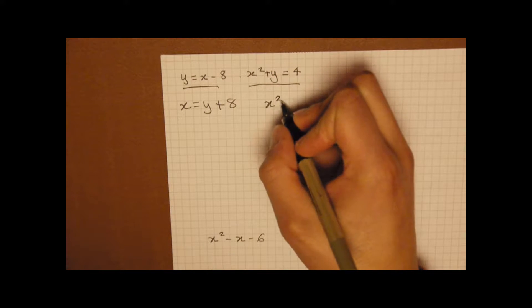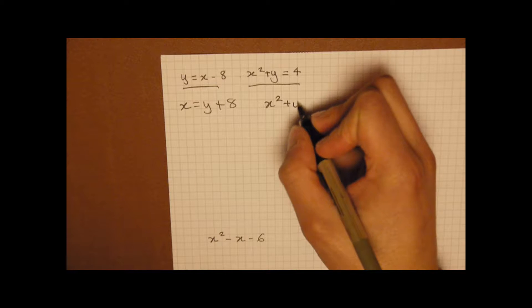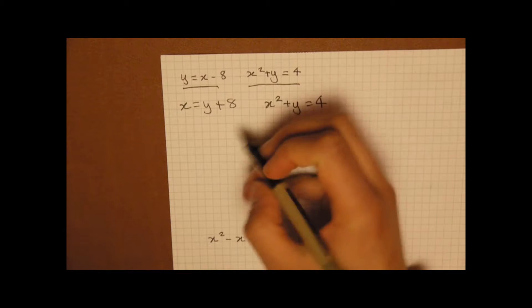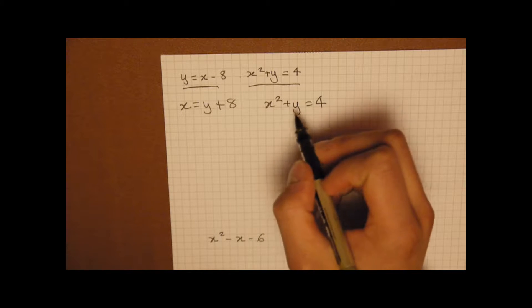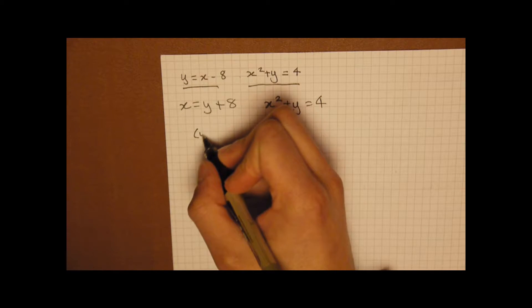And we already know that x squared plus y equals 4. So as you can probably guess, what we could do is we could substitute y plus 8 into x squared plus y equals 4. And that is what we are going to do.